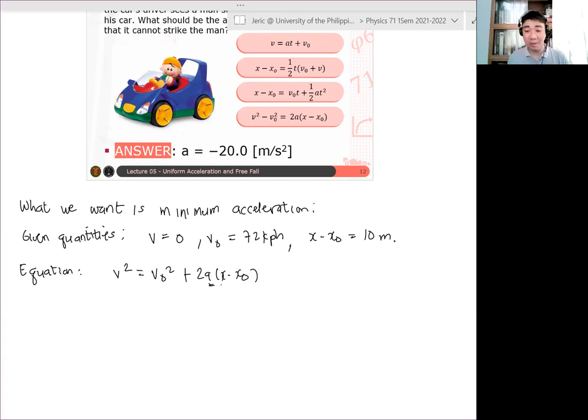So we will solve for a and say that, okay I hope you get this, a is just equal to v squared minus v naught squared over 2 quantity x minus x naught.